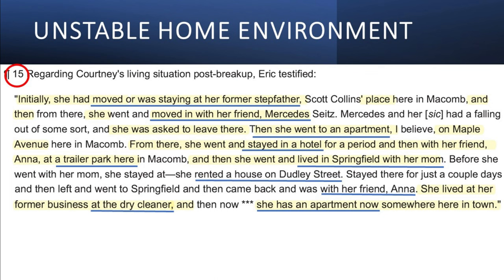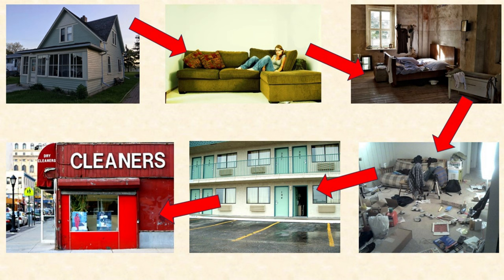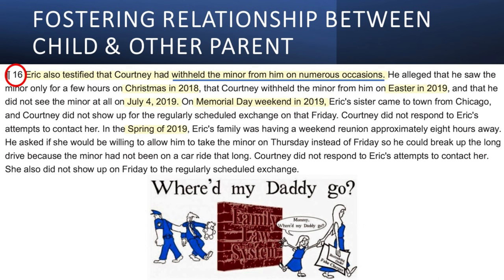Paragraph 15 tells us that Eric testified Courtney had an unstable living environment, saying: Initially she moved or was staying at her former stepfather's place. Then she moved in with her friend Mercedes and was asked to leave. Then she went to an apartment on Maple Avenue. From there she stayed in a hotel for a period, then with her friend Anna at a trailer park, then lived in Springfield with her mom, then lived at her former business at the dry cleaner, and now has an apartment somewhere in town. Paragraph 16 says Eric also testified that Courtney had withheld the minor from him on numerous occasions, and it goes on to state specific and exact instances of this.